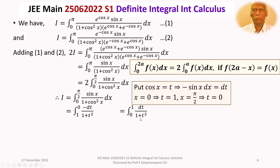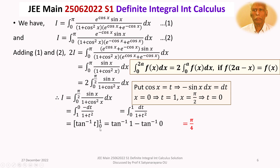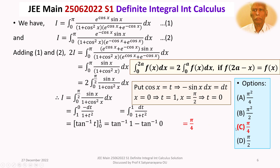The integral from 0 to 1 of dt / (1 + t²) is a familiar standard form. The result is tan⁻¹(t) evaluated between 0 and 1, giving tan⁻¹(1) − tan⁻¹(0) = π/4 − 0 = π/4. Therefore the given definite integral I equals π/4, which corresponds to option C.